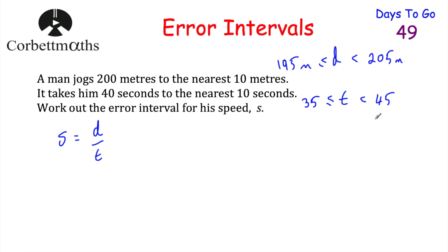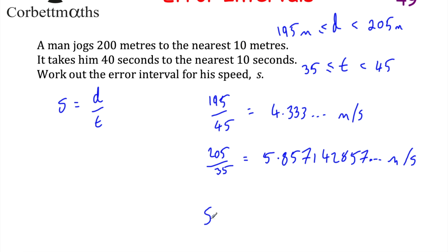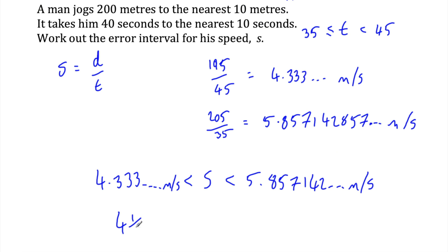To find the lower bound for speed, we use the lowest distance and greatest time: 195 ÷ 45 = 4.333... metres per second. For the upper bound, we use the greatest distance and shortest time: 205 ÷ 35 = 5.857142... metres per second. These can be written as mixed numbers: 4⅓ and 5 6/7 metres per second. So the error interval for speed s is: 4⅓ < s < 5 6/7 metres per second.